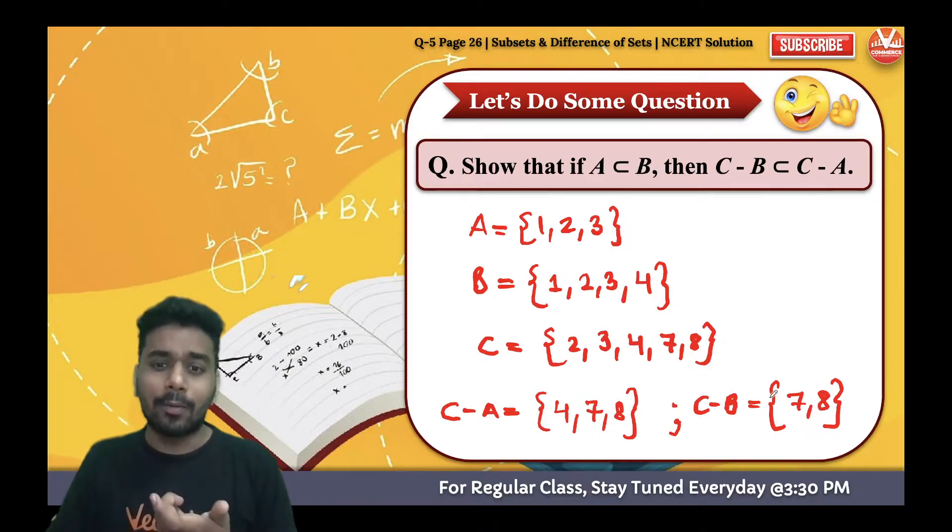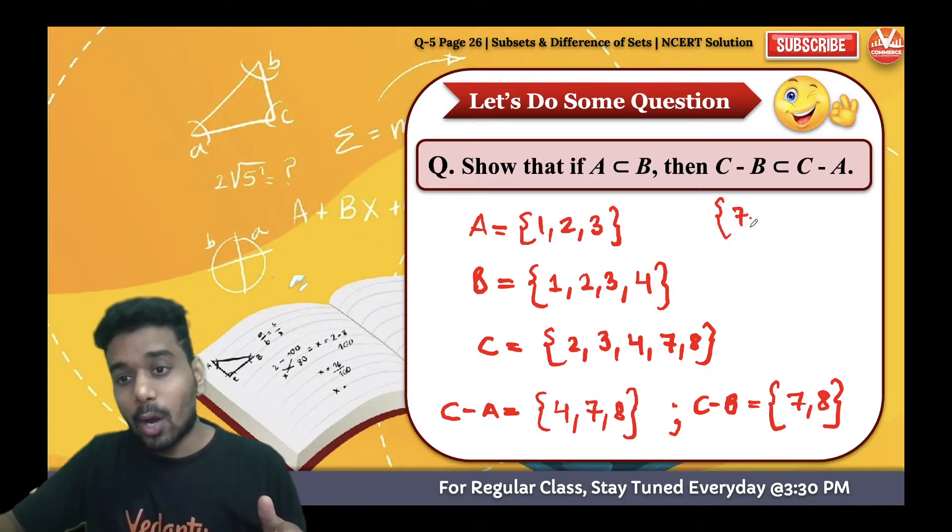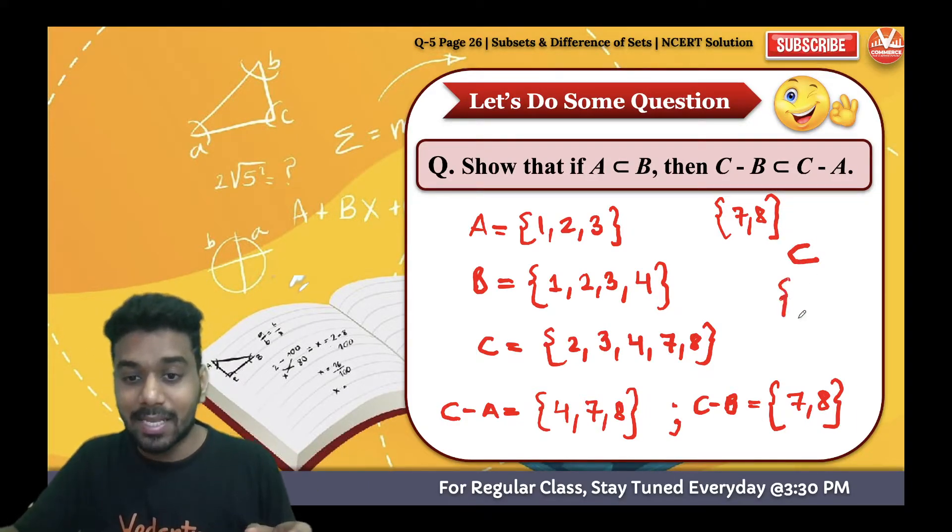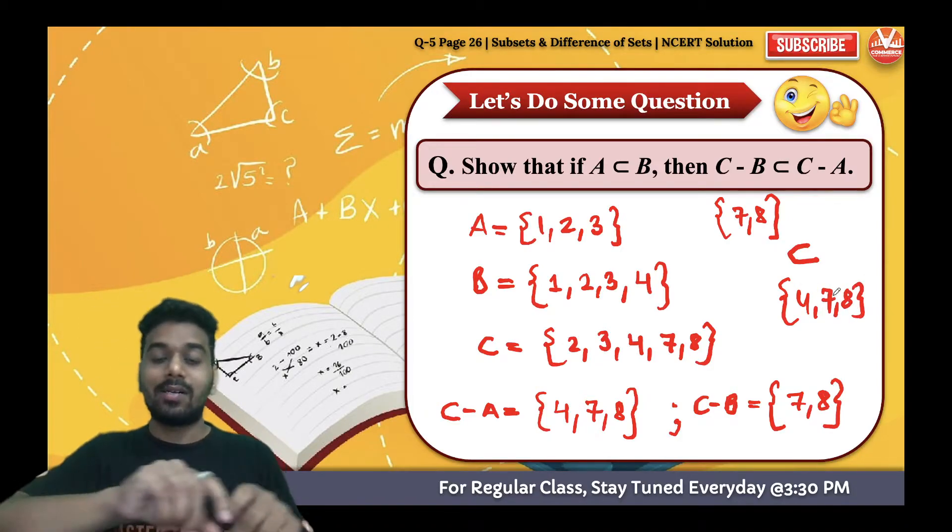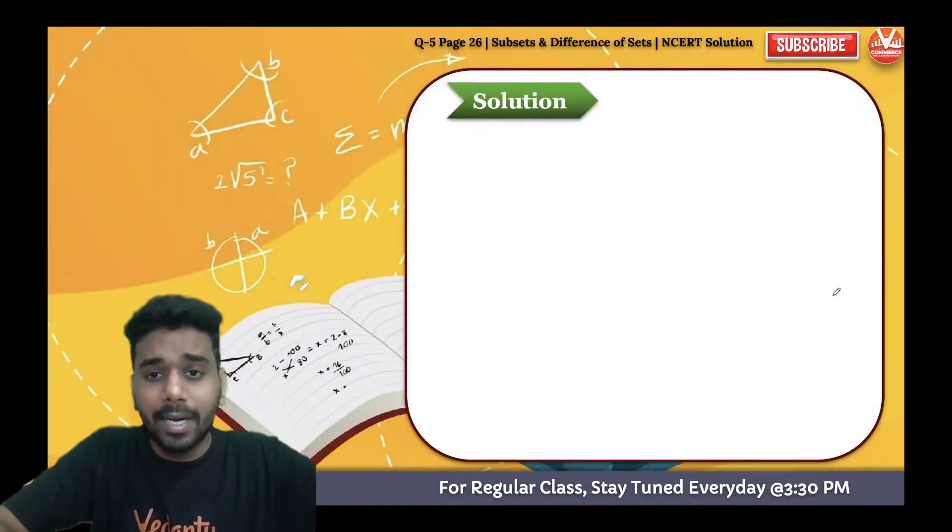7? No. 8? As I've said, this will be the smaller set. And now the question is, these elements {7, 8}, all the elements of C minus B are present in C minus A? Yes. This is the explanation through example.